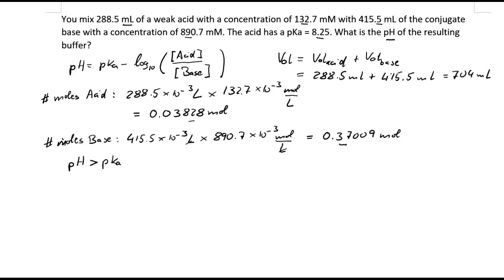So what we can do now is: we have calculated the moles, we've calculated the volume, and now we can put that into our Henderson-Hasselbalch equation. So pH equals pKa, and for the pKa we had 8.25, minus log to the base of 10. Now what do we get for the acid concentration? For the acid concentration we had 0.03828 mole per the total volume, that was 704 milliliters.